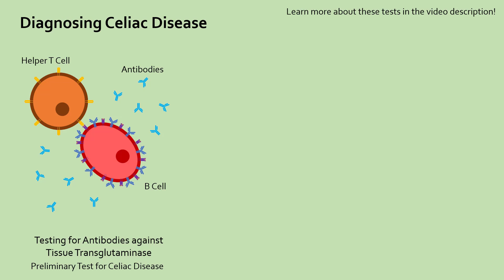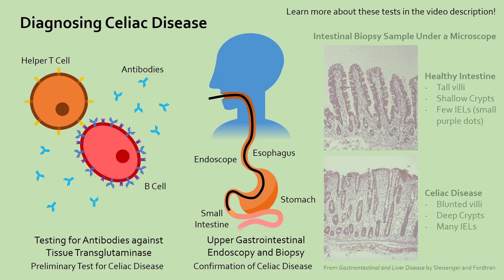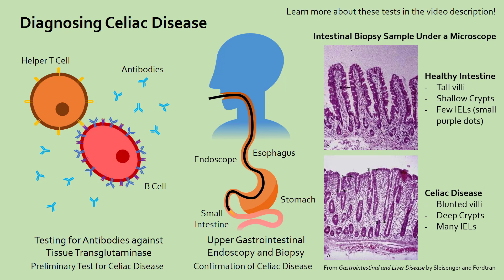To confirm a diagnosis, doctors will have to perform an upper gastrointestinal endoscopy, in which they insert a thin, flexible camera called an endoscope down your throat and into your intestines to check for intestinal damage. At the same time, doctors will get a sample, or biopsy, of intestinal tissue that is analyzed under the microscope. If intestinal damage is seen, such as villous blunting, crypt hyperplasia, and increased intraepithelial lymphocytes, then a diagnosis for celiac disease is confirmed.